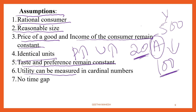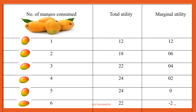Utility can be measured in terms of cardinal numbers, that is 1, 2, 3, 4 and so on. Another assumption is no time gap — when we are conducting the experiment, consumption should continue without any time gap.